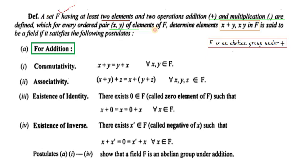If we take any two elements from set F, then set F should be closed under addition and it should also be closed under multiplication. These are the addition field properties.